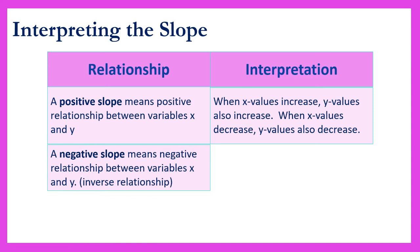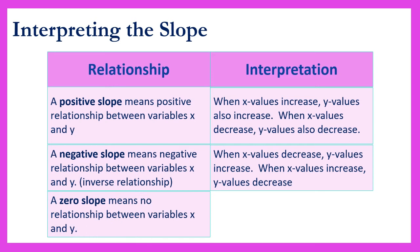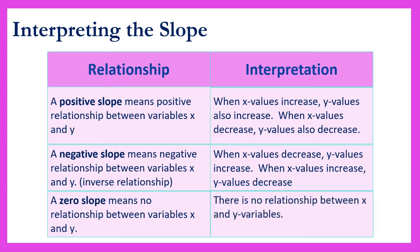When the sign of slope is negative, there is also a negative relationship between variables x and y — we also call this an inverse relationship. This means that when x values decrease, y values increase. When x values increase, y values decrease. A zero slope means there is no relationship between x and y variables.